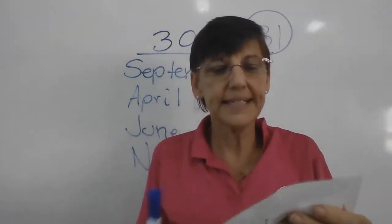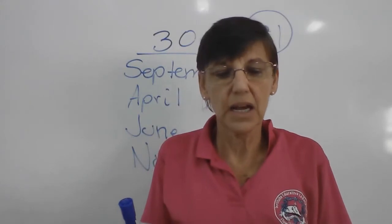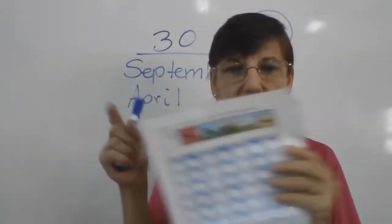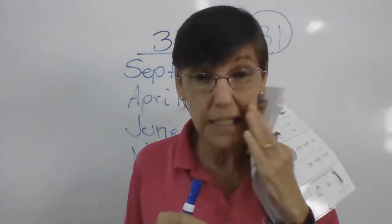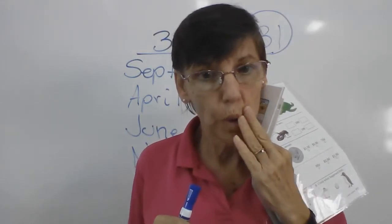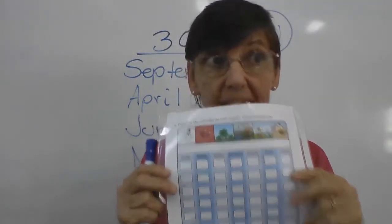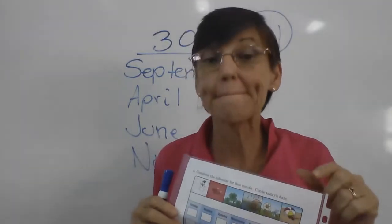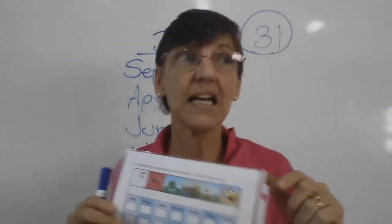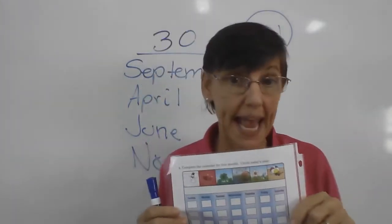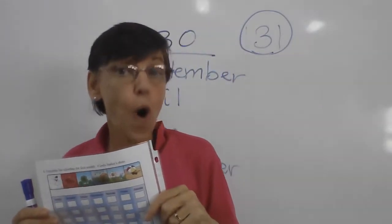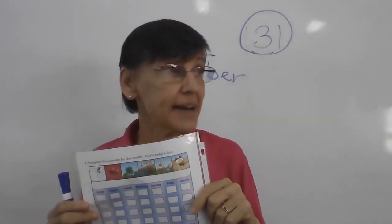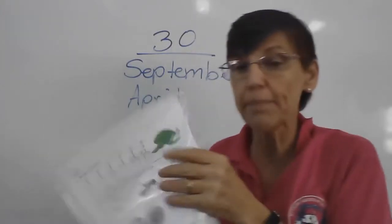And it says, circle today's date. So, do you know what day today is? Well, you find it. See if you can find it. It's on your homework paper. See how smart you are. Today is Tuesday. Okay? Okay, nice Tuesday. Good.